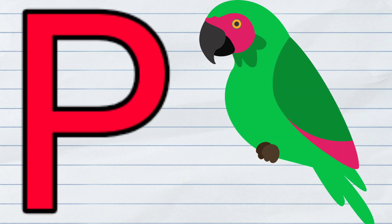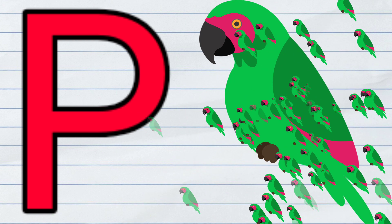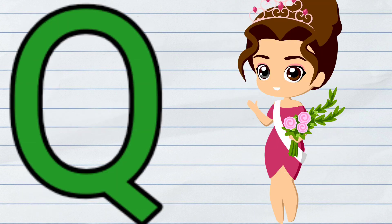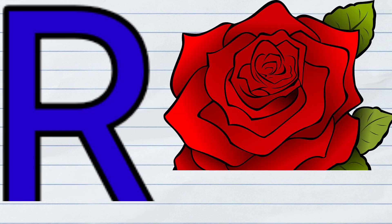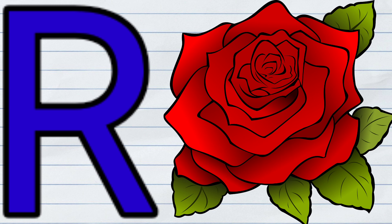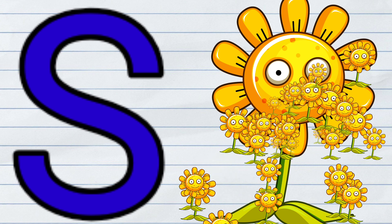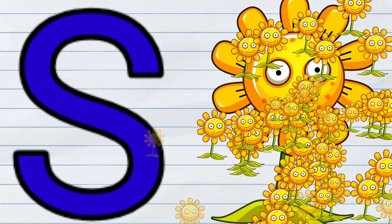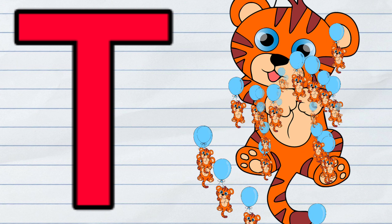P. P for aero. Q. Q for queen. R. R for rose. S. S for sun. T. T for tiger.